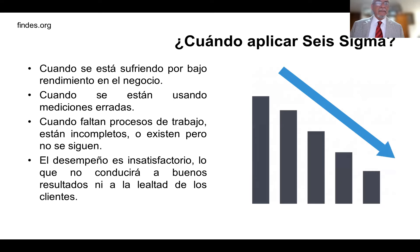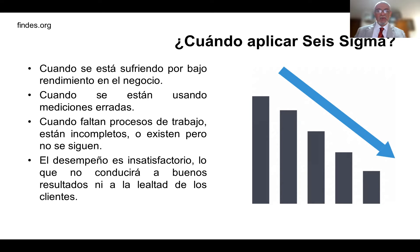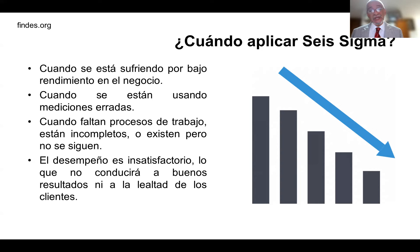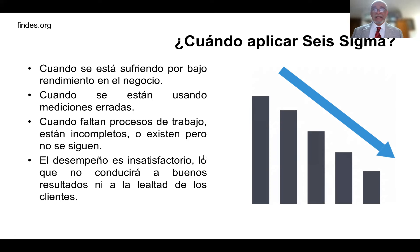¿Cuándo vamos a aplicar seis sigma? Cuando se está sufriendo por el bajo rendimiento de un negocio donde no llegamos ni siquiera al punto de equilibrio. Igualmente cuando se están usando mediciones cerradas y no tenemos una idea clara de lo que está ocurriendo o por qué está ocurriendo. Igualmente cuando faltan procesos de trabajo, procesos incompletos, procesos no documentados que existen pero no se siguen. Y desde luego cuando el desempeño es insatisfactorio, lo que no nos conducirá a buenos resultados ni a la lealtad de los clientes.